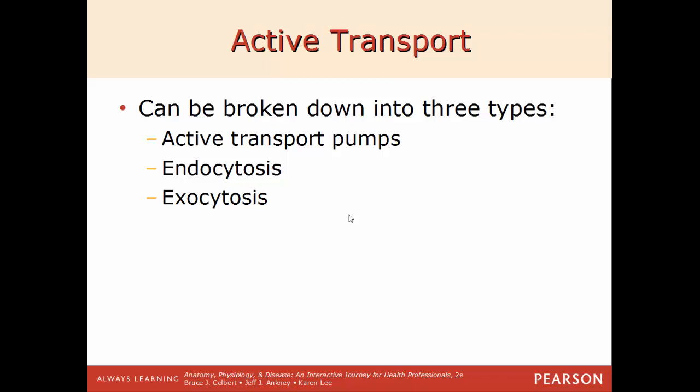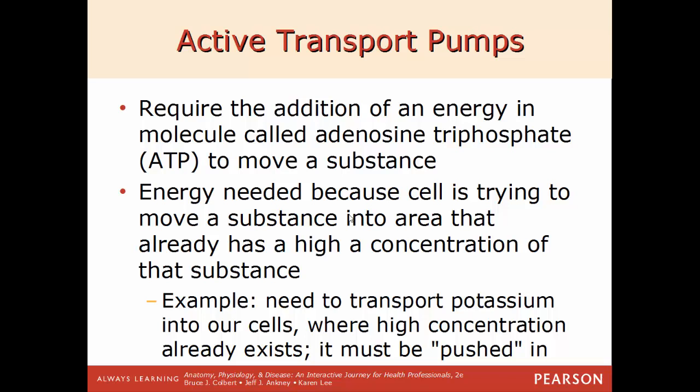Active transport requires energy to happen. There are active transport pumps, endocytosis, and exocytosis. The pumps require the addition of the energy molecule ATP (adenosine triphosphate). Without ATP, nothing in active transport can happen. The reason energy is needed is that you're moving from an area of low concentration to an area of high concentration — going against the concentration gradient. For example, transporting potassium into cells where it is already highly concentrated requires extra effort to push it in.